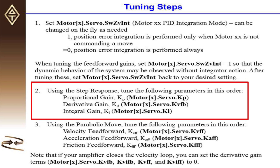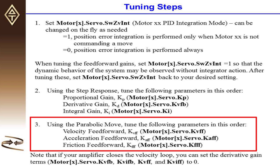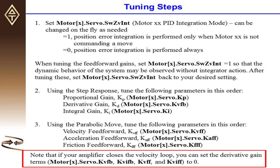The second step is to subject your motor to a step move. This instantaneously commands a position of the motor, and the motor attempts to reach that position immediately. Use this test trajectory to tune kp, kd, and ki, usually in that order. Once you have finished tuning these gains, move on to the third step: tuning with the parabolic move. Use this test trajectory to tune kvff, kaff, and kfff, usually in that order. If your amplifier closes the velocity loop, you can set the derivative gain terms to 0. If you are using a torque mode amplifier, however, requiring PMAC to close the velocity loop, you must use derivative gain terms in order to stabilize your motor.